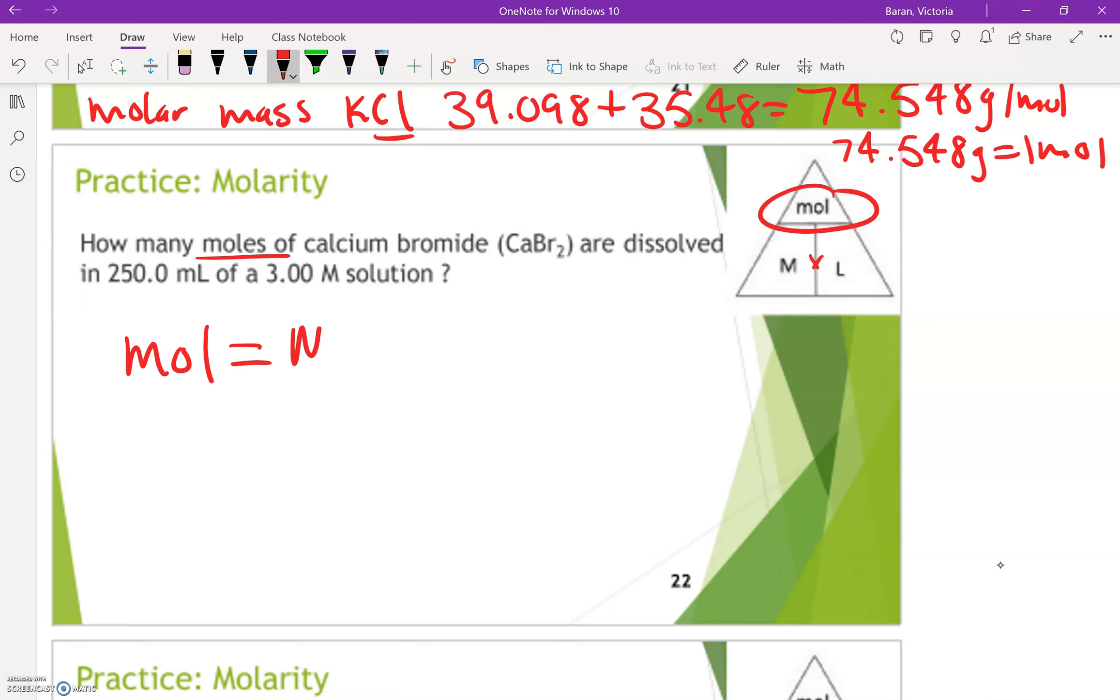So that's going to be molarity times liters. So moles is going to be equal to the molarity. They tell me the molarity is 3 times. Now this time I need liters and they gave me milliliters. So in order to get milliliters into liters.